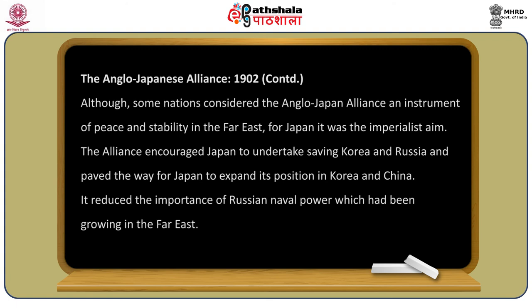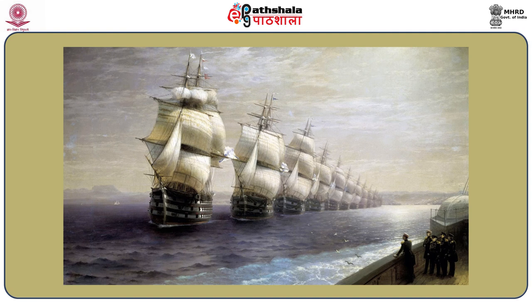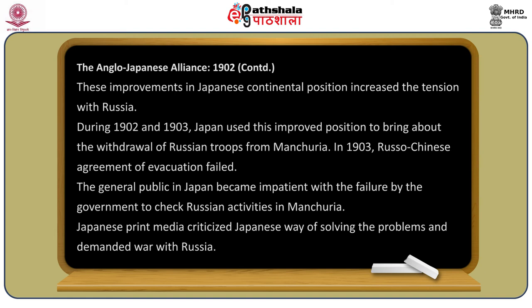No one doubts that the Anglo-Japanese alliance of 1902 was in fact a defense against Russia. Although some nations considered it an instrument of peace and stability in the Far East, for Japan it was an imperialist aim. The alliance encouraged Japan to undertake saving Korea from Russia and paved the way for Japan to expand its position in Korea and China. It also reduced the importance of Russian naval power, which had been growing in the Far East.